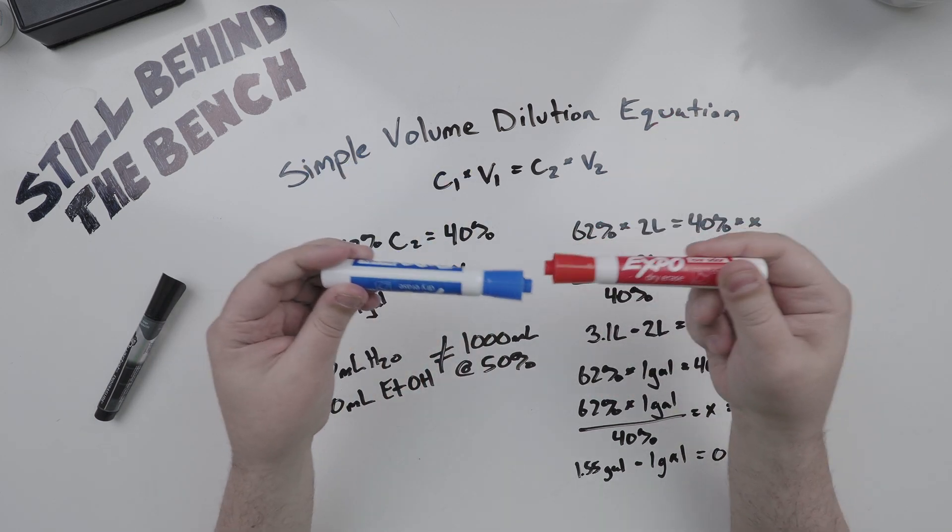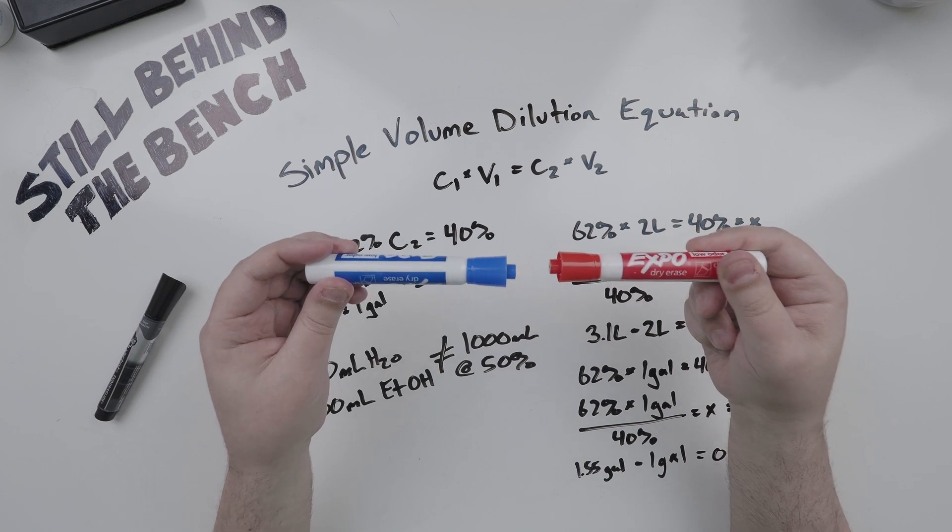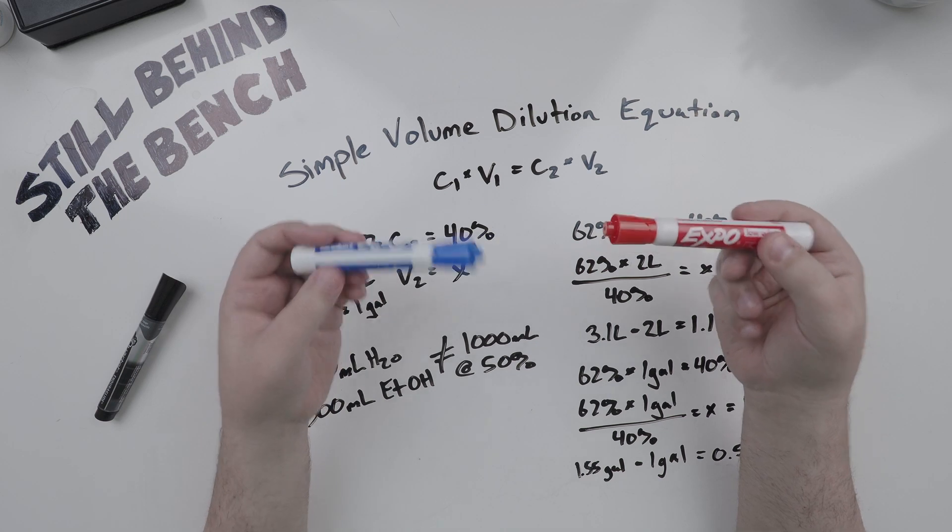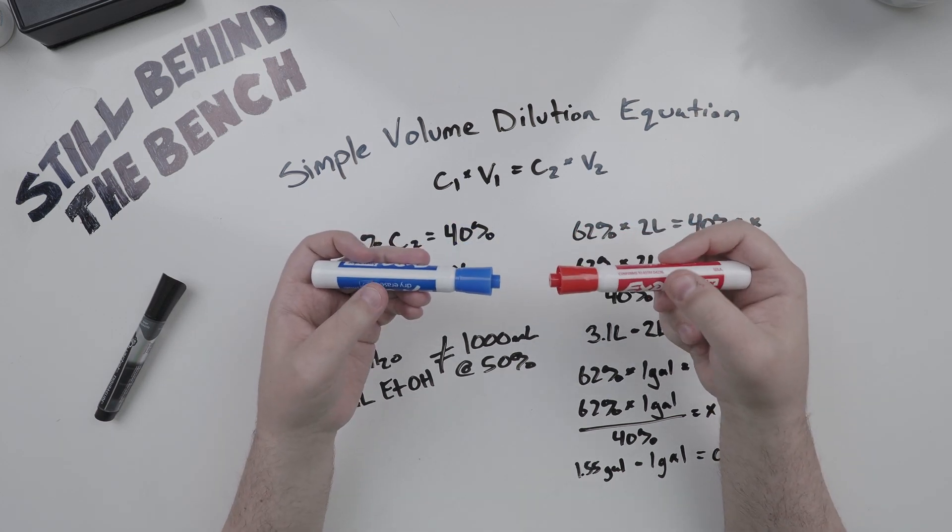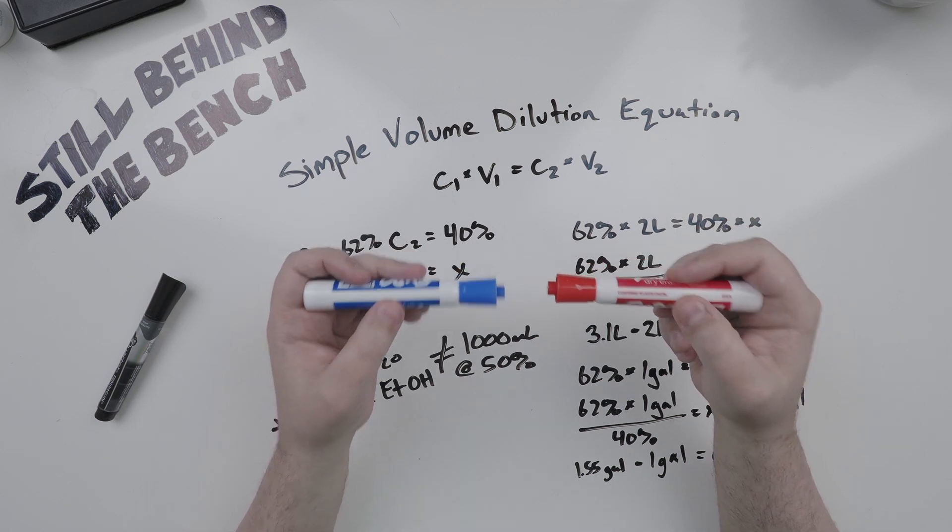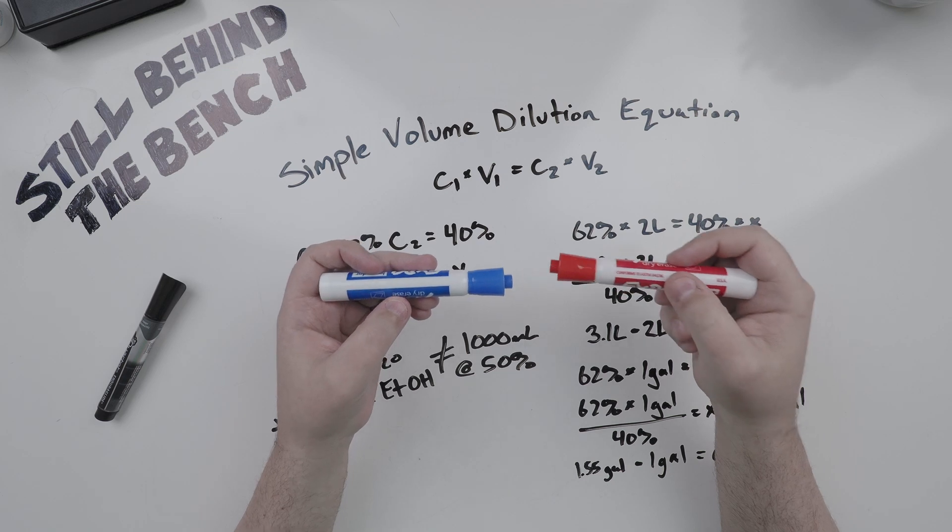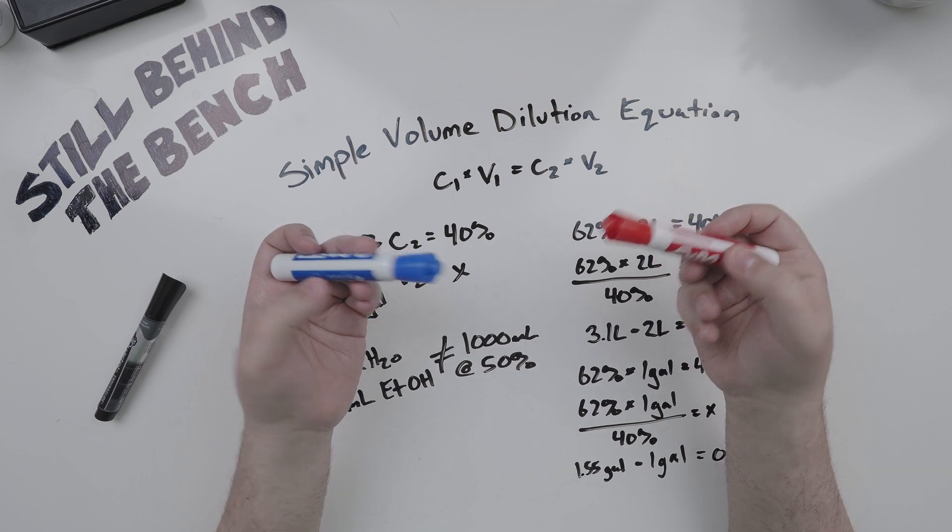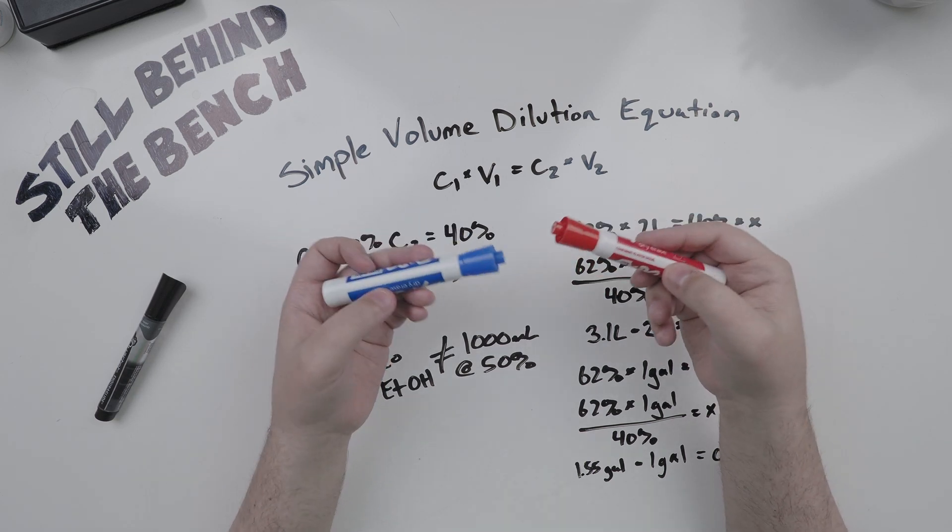The molecules of water and ethanol sit closer together than two molecules of water do or two molecules of ethanol do. Then to make things harder, the distance depends on the concentration of the ethanol. It's a non-linear relationship that can't be easily calculated. If you're interested you can look into partial molar volumes. It is a very deep rabbit hole.